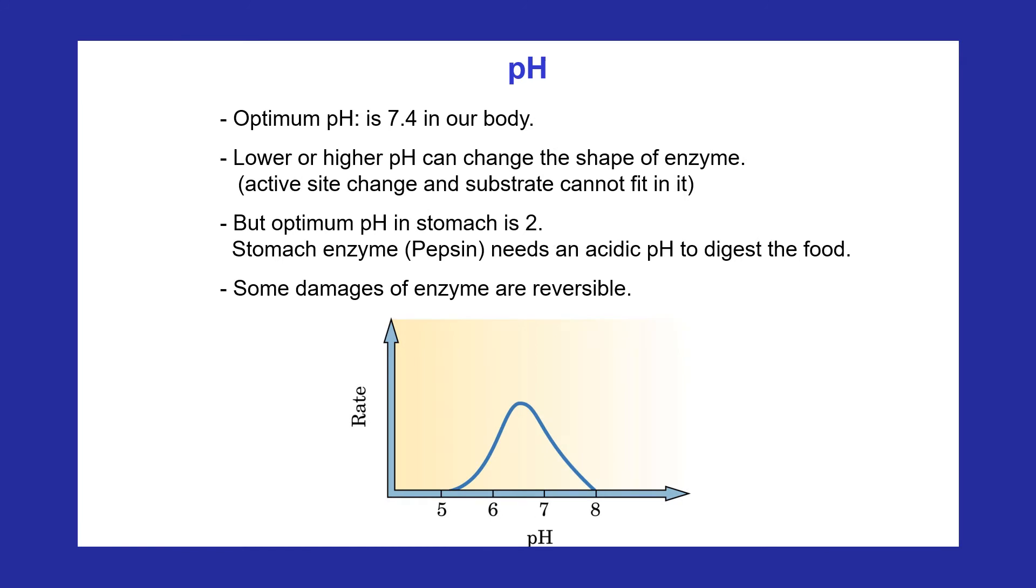Enzymes are most active at their optimum pH, the pH that maintains the proper tertiary structure of the protein. A pH value above or below the optimum pH causes a change in the three-dimensional structure of the enzyme that disrupts the active site. As a result, the enzyme cannot bind substrate properly and no reaction occurs.